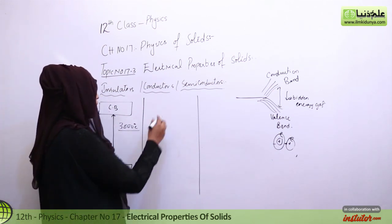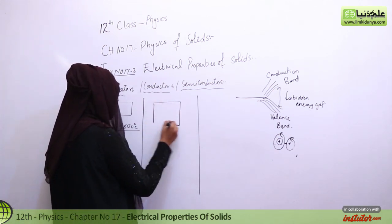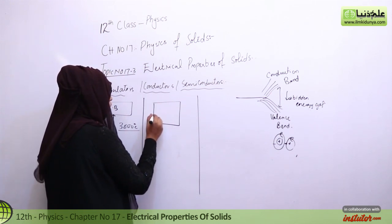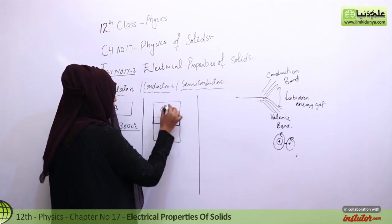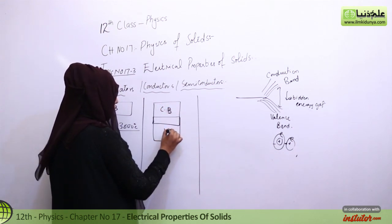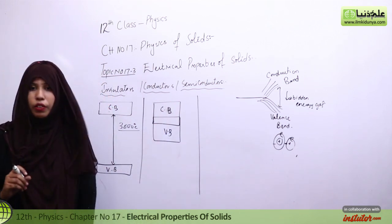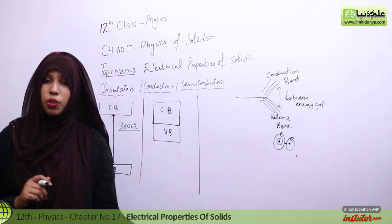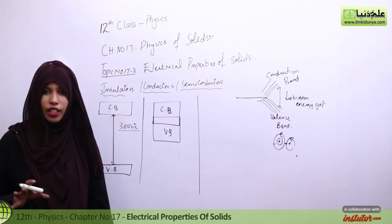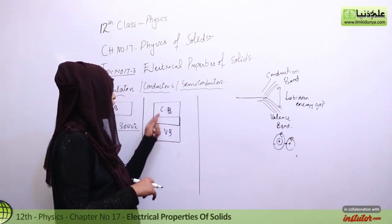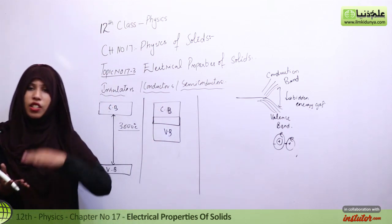Now, if we talk about conductors, our conduction band and our valence band are overlapped. Conduction band and this is the valence band. These two have overlapped. It means that electrons don't need any kind of energy or temperature in order to move from valence band to conduction band. They can easily go here.